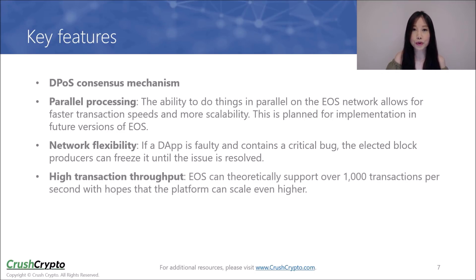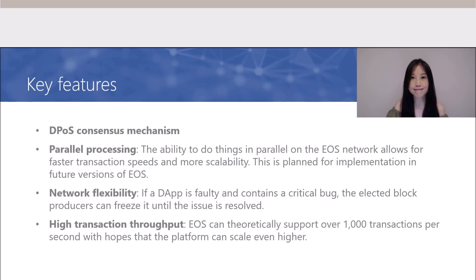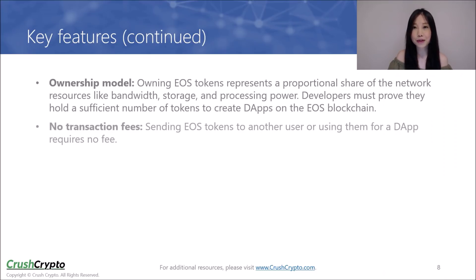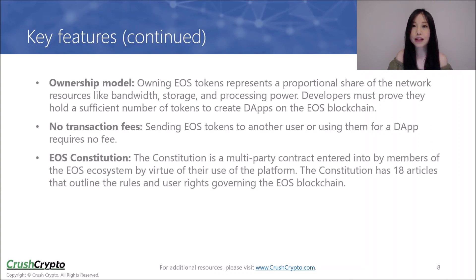EOS will also have high transaction throughput. As I mentioned earlier, EOS can theoretically support over 1,000 transactions per second with the potential to scale even higher. Owning EOS tokens represents a proportional share of the network resources, and developers must prove they hold a sufficient number of tokens in order to create dApps on the EOS blockchain. EOS has no transaction fees — sending EOS tokens to another user or using them for a dApp requires no fee. Finally, the EOS constitution is a multi-party contract entered into by members of the EOS ecosystem, with 18 articles that outline the rules and user rights governing the EOS blockchain.